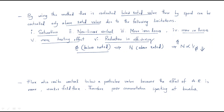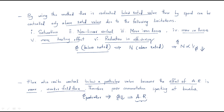Flux also cannot be controlled below a particular value. If flux decreases too much, the effect of armature reaction becomes more severe. Armature reaction means the armature flux affects the main field flux. With a weaker field flux, commutation becomes poor and sparking at the brushes is possible — these are all adverse effects of reducing flux too much.